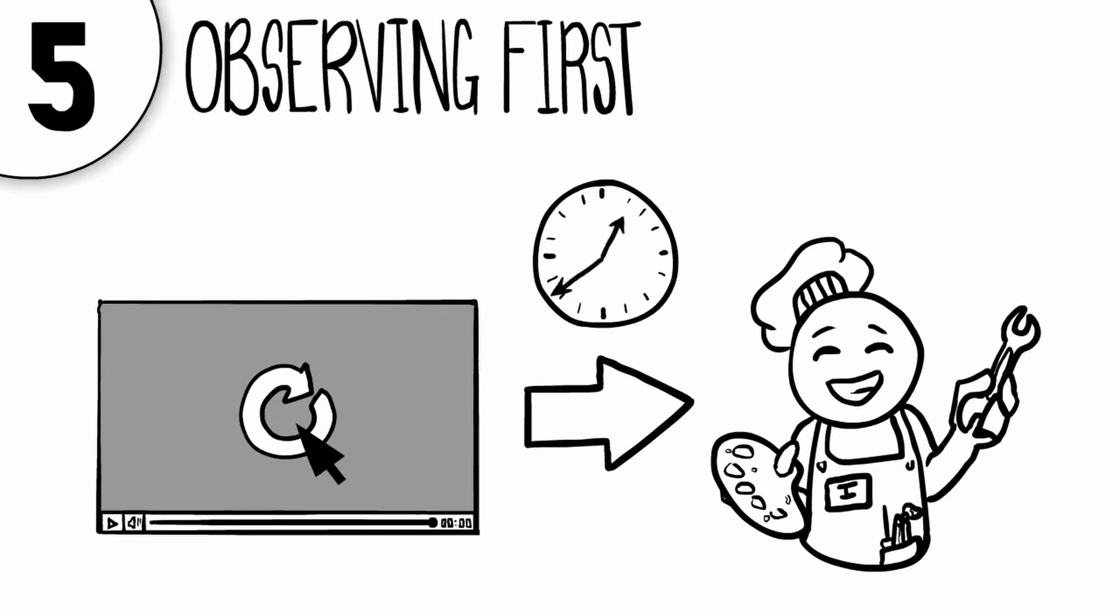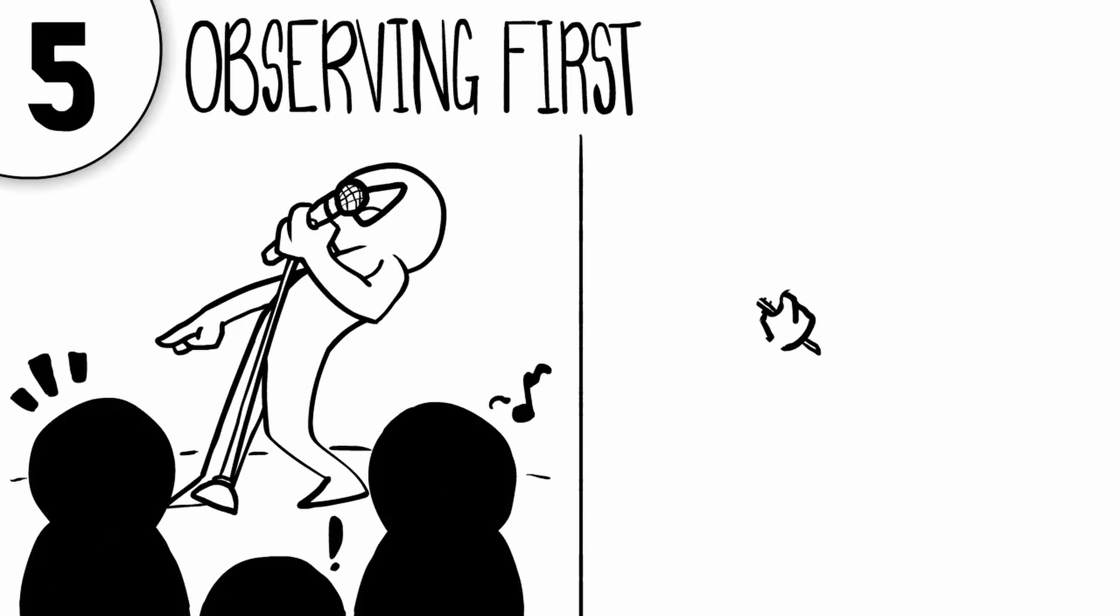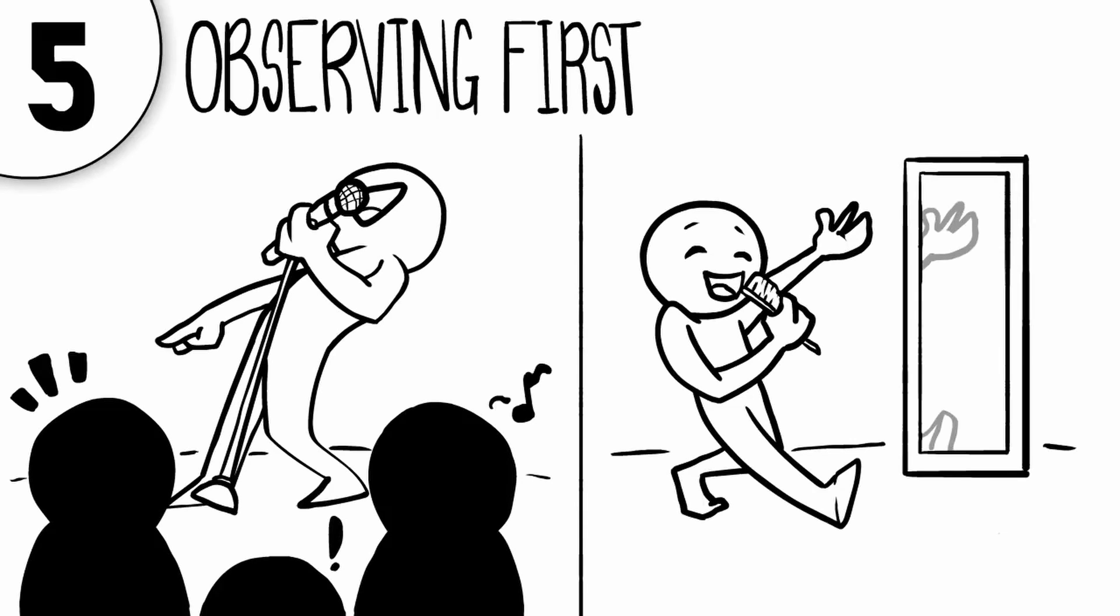Introverts like to take their time and go at their own pace when they develop new skills and digest new information, whereas extroverts usually enjoy performing for an audience. Introverts prefer to practice in private without feeling the pressure of doing it in front of others.